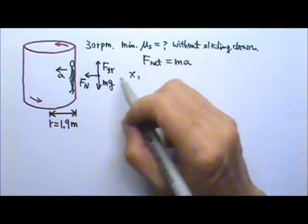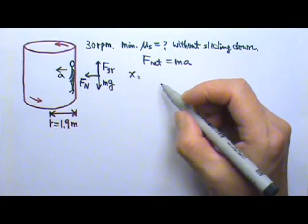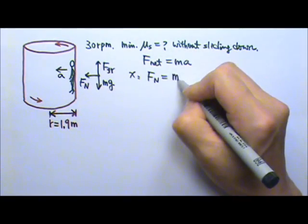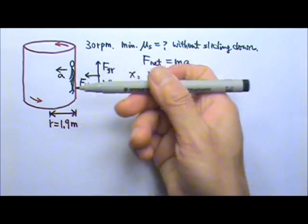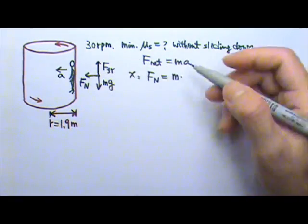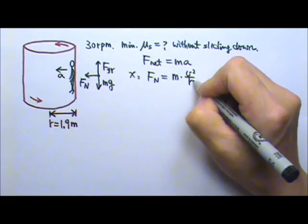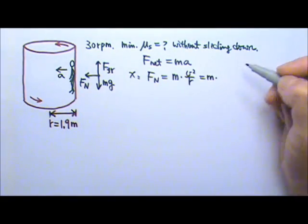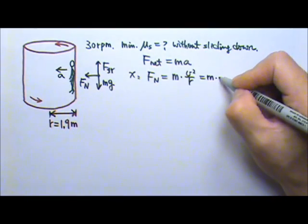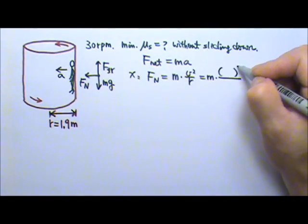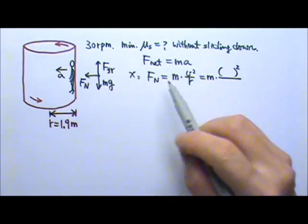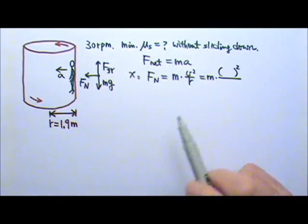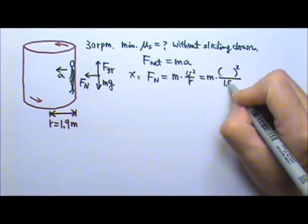In the x direction, the net force, there is only one normal force. So the net force is the normal force, and that equals to Ma. The acceleration in the x direction is the centripetal acceleration. So we can use v squared over r. So this M stays as M because it's not given. And the speed. Now we don't know the speed, although we are given information so that we can find the speed.